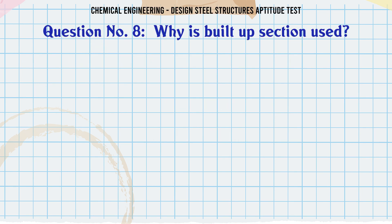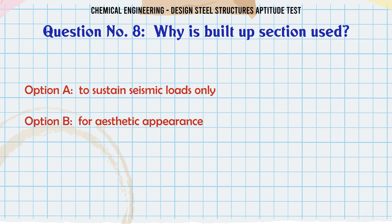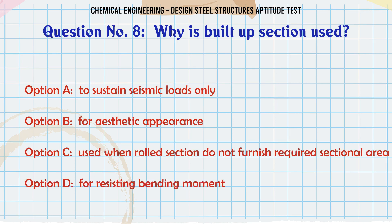Why is built-up section used? A. To sustain seismic loads only. B. For aesthetic appearance. C. Used when rolled sections do not furnish required sectional area. D. For resisting bending moment.